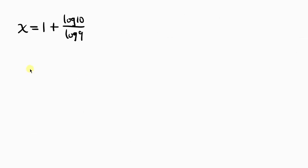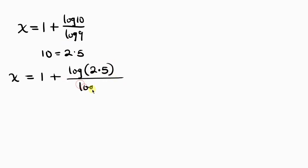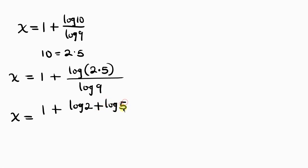Our next step would be to split this 10 into 2 times 5, because 10 is the same as 2 times 5. So x equals 1 plus the log of 2 times 5 all over log 9. Applying the product law of logarithm, log 2 times 5 becomes log 2 plus log 5, all over log 9.